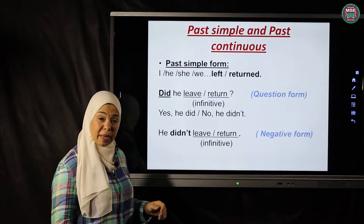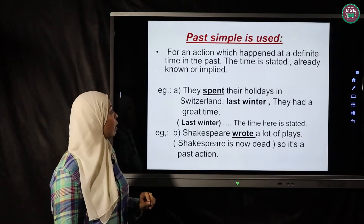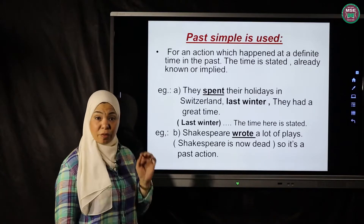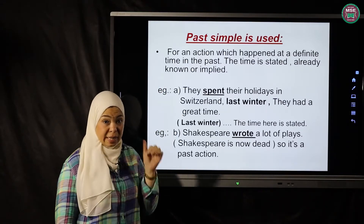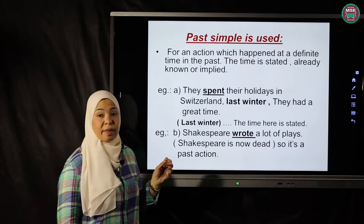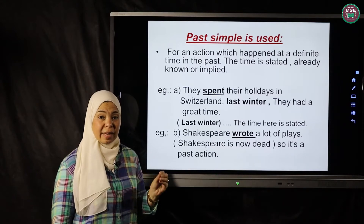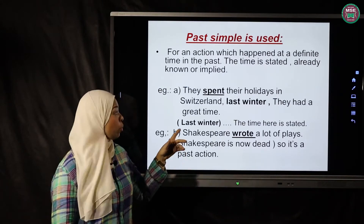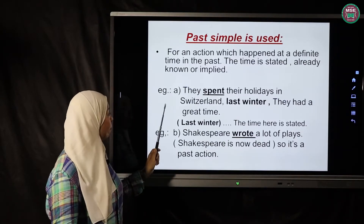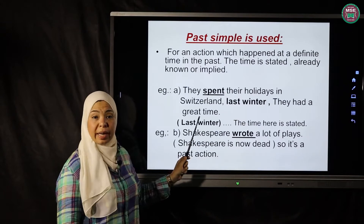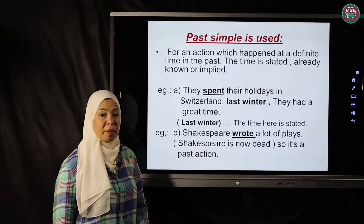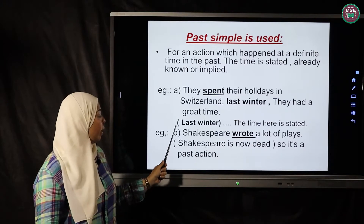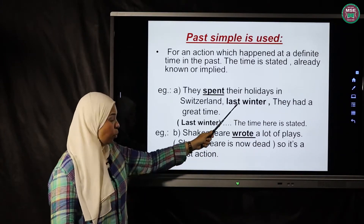The usages for this tense: past simple is used first for an action which happened at a definite time in the past. The time is stated, already known, or implied. When I say definite time, it means I should mention exactly when the action happened — using words like 'yesterday', 'in 1999', 'last year'. Example: 'They spent their holidays in Switzerland last winter.' Here 'last winter' is the stated time expression.